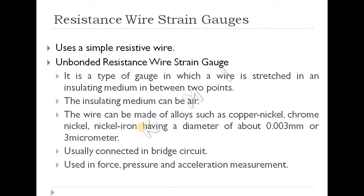The wire can be made of alloys such as copper-nickel, chrome-nickel, or nickel-iron. The diameter of the wire is 0.003 mm, or 3 micrometers.